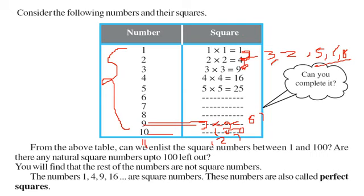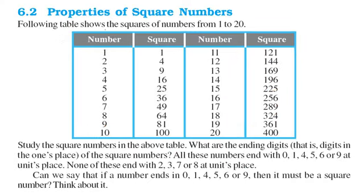Only 1, 4, 9, 16, 25, 36, 49, 64, 81, and 100 they are square numbers. These numbers are called as perfect squares.